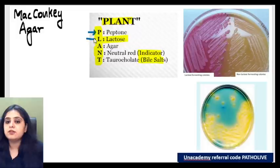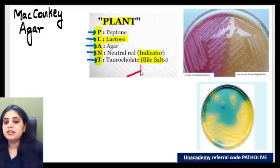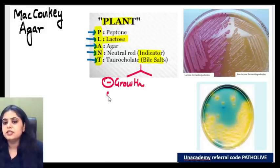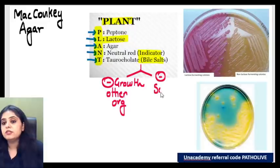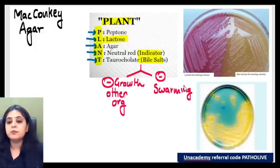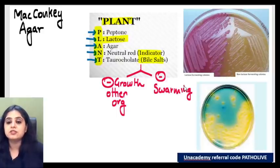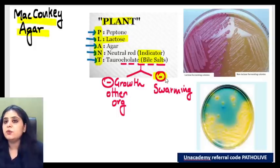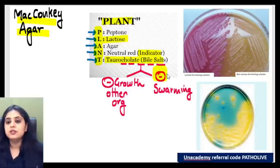So repeating PLANT: P for peptone, L for lactose, A for agar, neutral red, and taurocholate. First and foremost, these bile salts are going to inhibit the growth of other organisms because bile salts have an inhibitory action. They also inhibit swarming. Remember, if they ask you how does MacConkey agar inhibit swarming, you will say because it contains bile salts — bile salts have an inhibitory action on swarming.